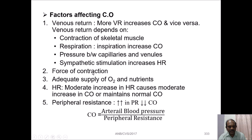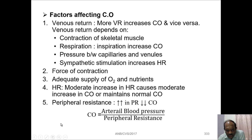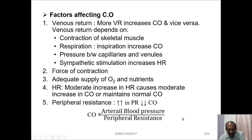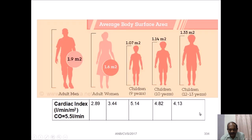Force of contraction also affects cardiac output. Adequate supply of oxygen and nutrients will also affect cardiac output. A moderate increase in heart rate causes a moderate increase in cardiac output or maintains normal cardiac output. Peripheral resistance also affects cardiac output — more peripheral resistance results in lesser cardiac output. Hence, cardiac output equals arterial blood pressure divided by peripheral resistance.